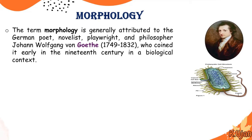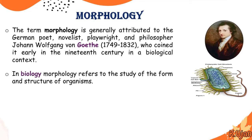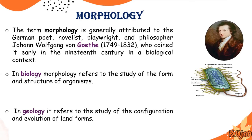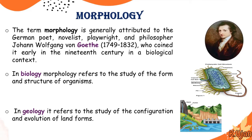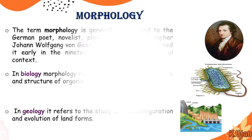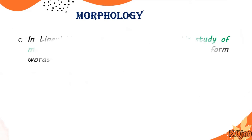What is the meaning of morphology in biology? In biology, morphology refers to the study of the form and structure of organisms — the basic structure of organisms like cells and other parts. In geology, it refers to the study of the configuration and evolution of land forms — how land is evolved and how it has been formed.